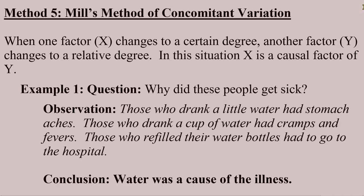The final method we will talk about from Mill is the Method of Concomitant Variation. We can describe the method thus: when one factor, x, changes to a certain degree, and another factor, y, changes to a relative degree, we have some evidence that x is a causal factor relative to y.